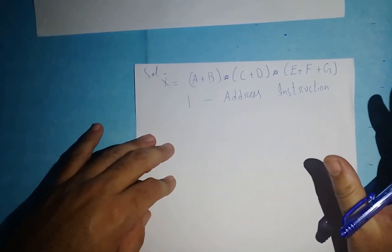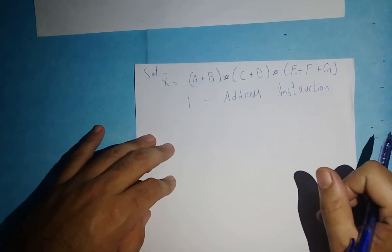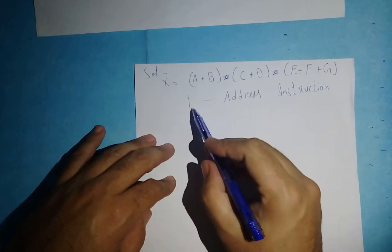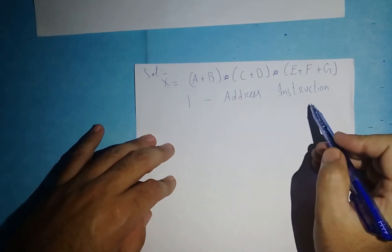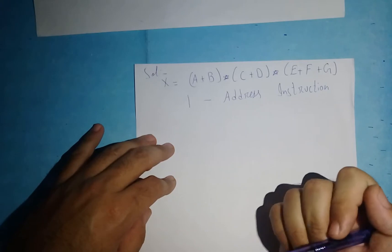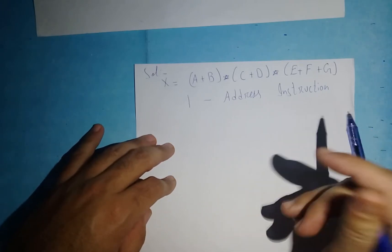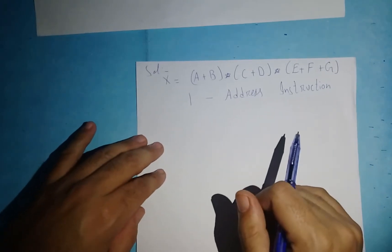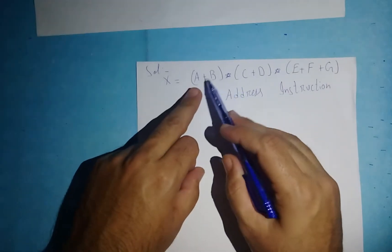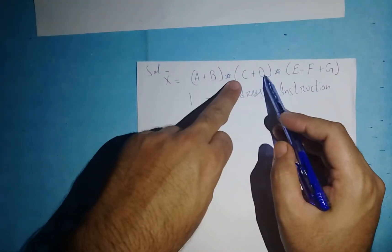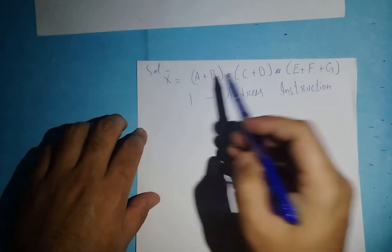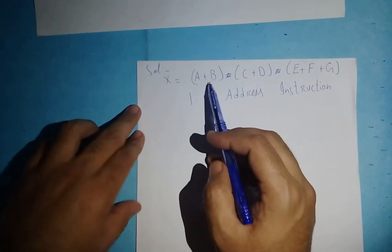You have to remember: when you write a program using a computer register with one address instruction, you have to use the accumulator register. Looking at the expression, I'm going to solve the first bracket, then the second bracket, and finally the third bracket.